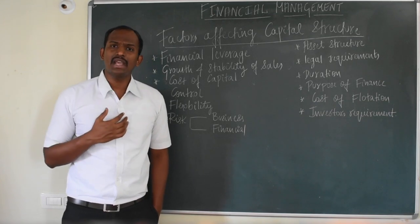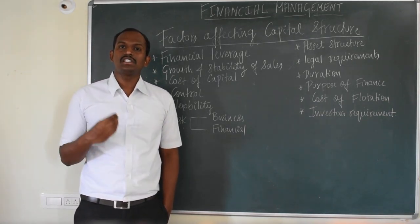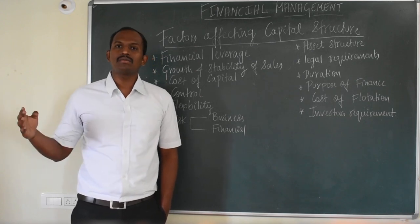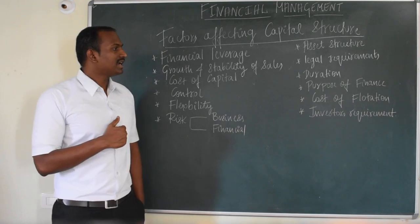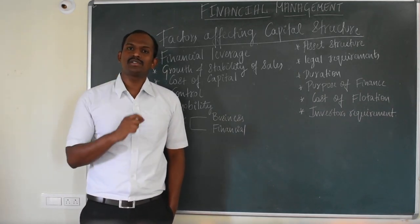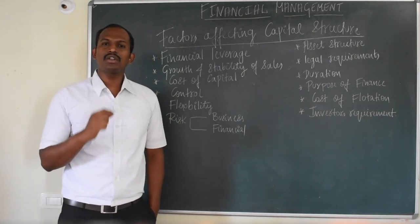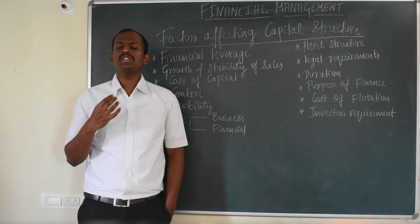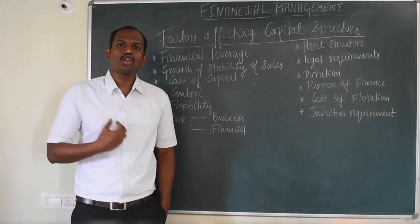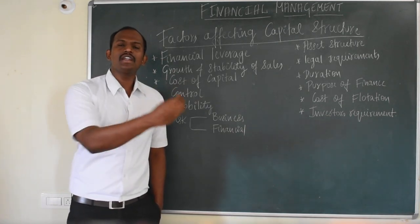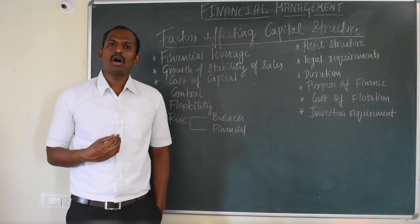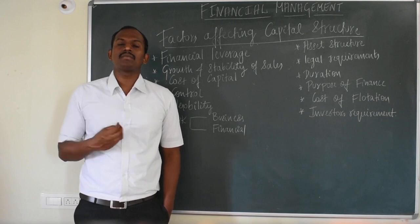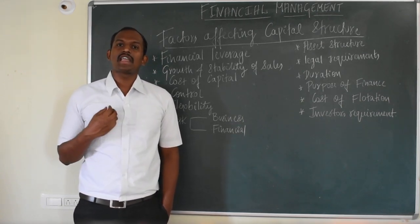The tenth factor is purpose of finance — the intention behind raising funds. If a company seeks finance for a productive purpose, it can go for debt capital. If finance is for a development purpose that takes longer time, equity capital is advisable. The eleventh factor is cost of flotation — issue expenses. The cost of flotation for debentures is low compared to equity issue costs. Finally, investor requirements: debenture investors expect minimum risk with minimum return, whereas equity investors always expect maximum return with maximum risk.